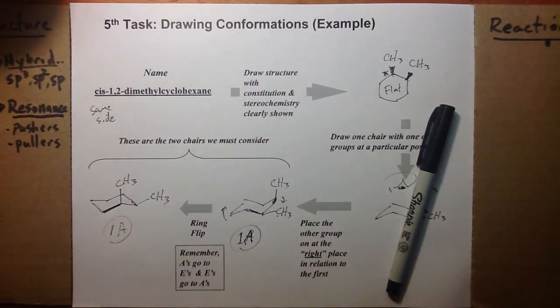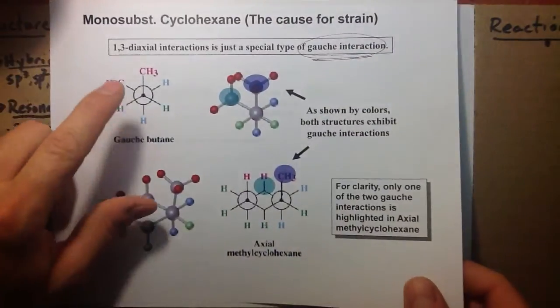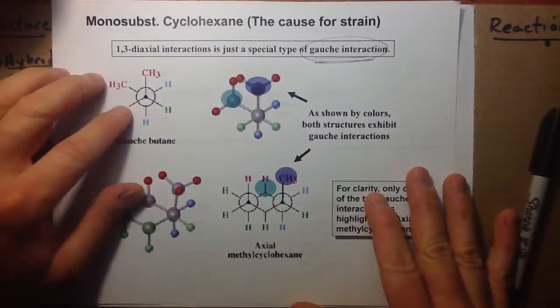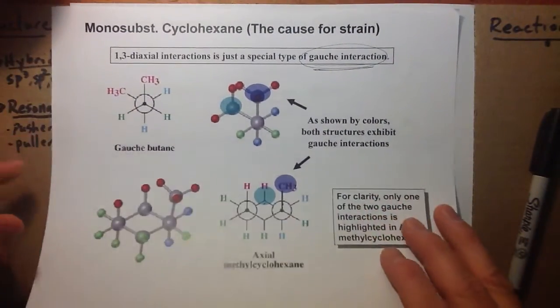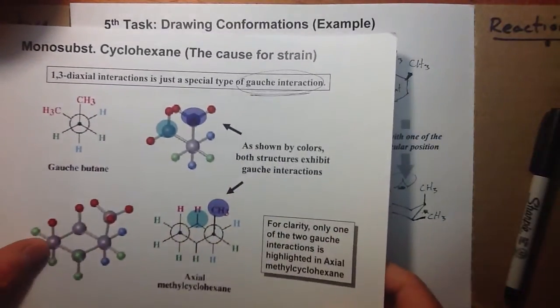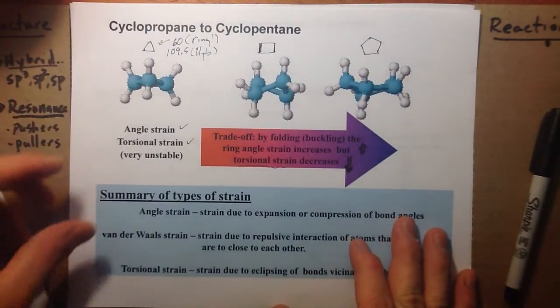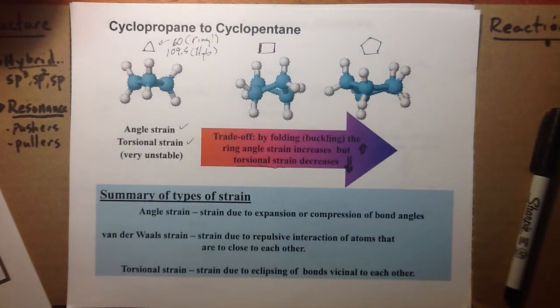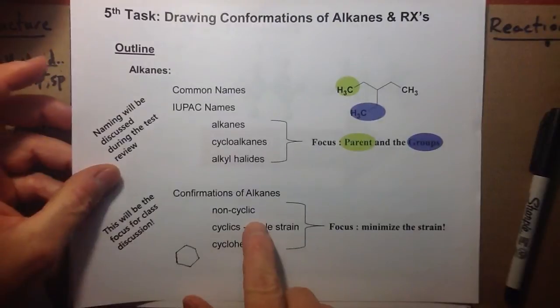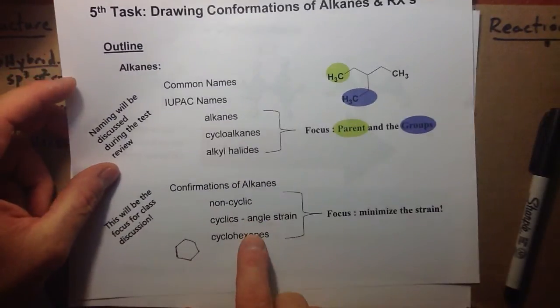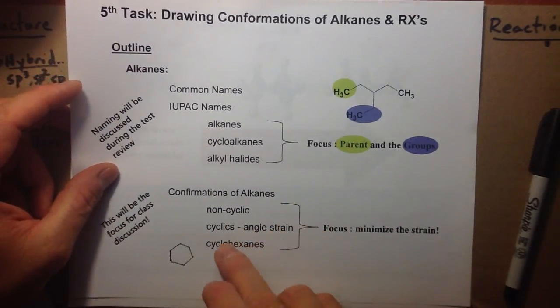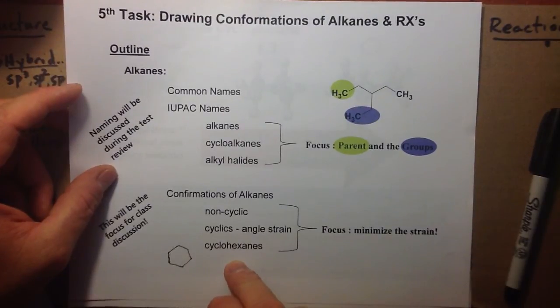We compared Newman projections for non-cyclic structures with chair conformations for cyclohexane, and also considered ring strain in smaller rings. So we've covered three things: Newman projections, angle strain in rings smaller than cyclohexane, and cyclohexane chair conformations.